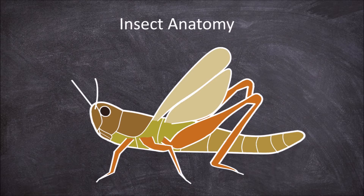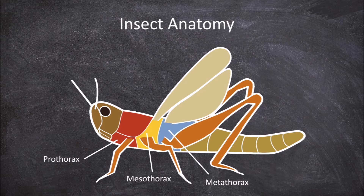The thorax consists of three segments: the prothorax, the mesothorax and the metathorax. The top of the prothorax is called the pronotum. A pair of legs is found on each of the three segments of the thorax.